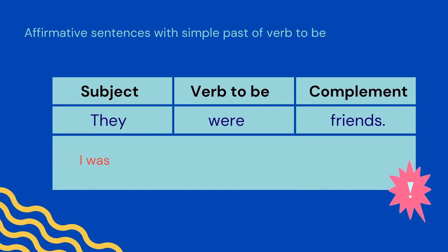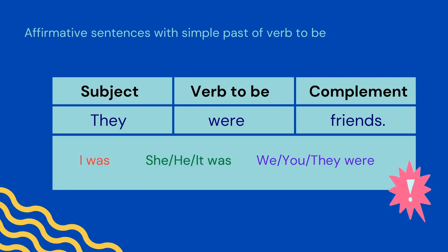To create affirmative sentences with the simple past of the verb to be, we will follow this structure: subject plus verb to be plus the complement. For example, they were friends. Keep in mind the changes according to the subject.